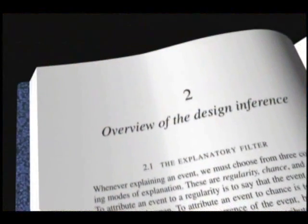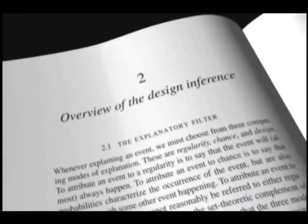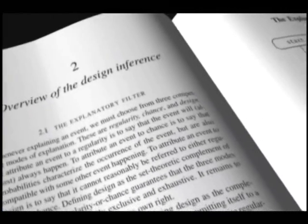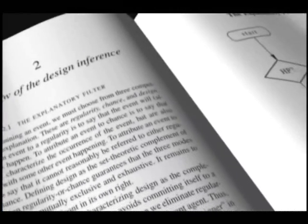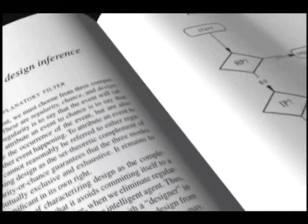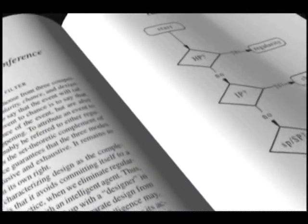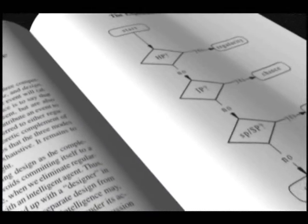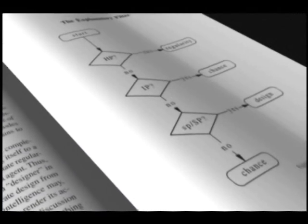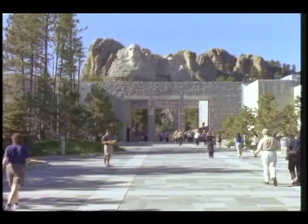So what I'm trying to do is to establish reliable, empirical, scientifically rigorous criteria for deciding whether something is in fact designed. So I was looking at the logic of it, and what I found was you need improbability and you need specification — the right sort of pattern, these objective patterns.